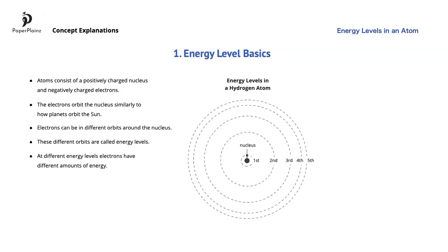Even though we often think about energy levels as orbits, energy levels are usually represented differently. They are labeled as n equals 1, n equals 2, n equals 3, and so on. As we mentioned, at different energy levels, electrons have different amounts of energy.